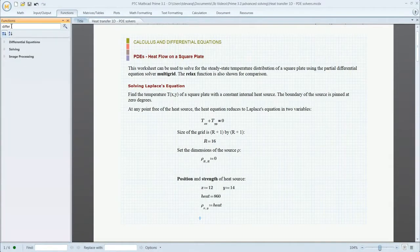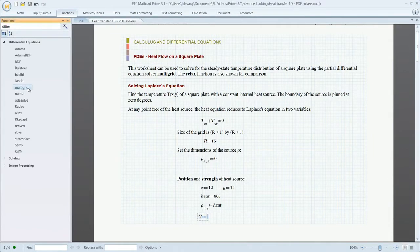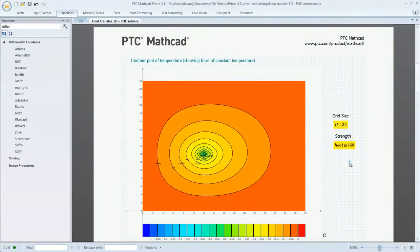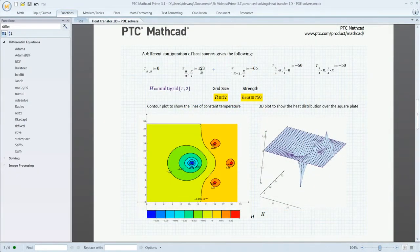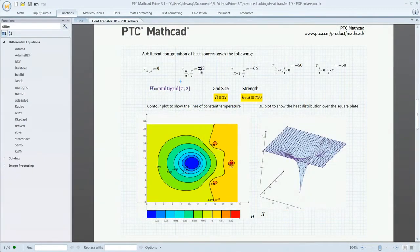Users can combine any number of functions to solve their most complex problems. For example, mechanical engineers can easily solve a one-dimensional heat transfer problem. By combining the partial differential equation solver with the multigrid function, engineers can easily determine the steady-state temperature distribution of the square plate.